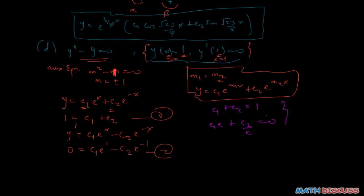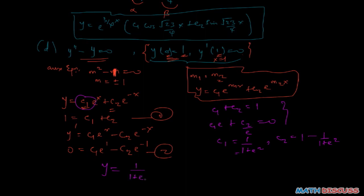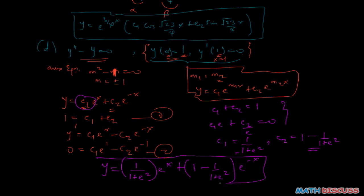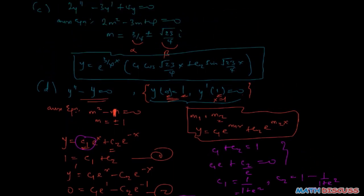Solving the two simultaneous equations, we get c1 equals 1 over (1 plus e squared) and c2 equals 1 minus 1 over (1 plus e squared). Therefore the particular solution is y equals (1 over (1 plus e squared))·e to the power x plus (1 minus 1 over (1 plus e squared))·e to the power negative x. That is the particular solution of the initial value problem, and that completes the problem.